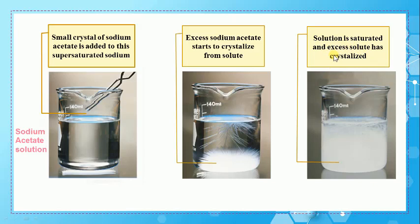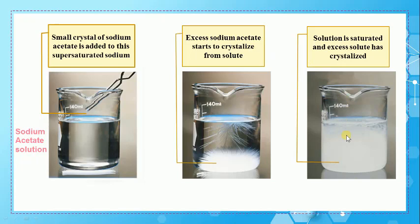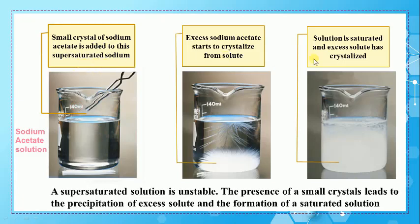Crystallized means it forms a crystal. Observing the three steps, from step one to step three we see the formation of crystals of sodium acetate, and the supersaturated solution becomes a saturated solution. So after the addition of a sodium acetate crystal, the solution changes from supersaturated to saturated and crystals form. Therefore, a supersaturated solution is unstable — the presence of small crystals leads to precipitation of excess solute and the formation of a saturated solution.